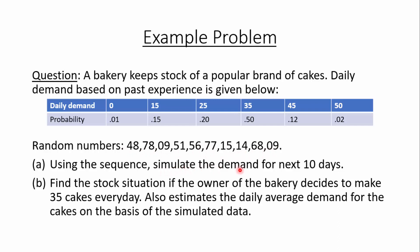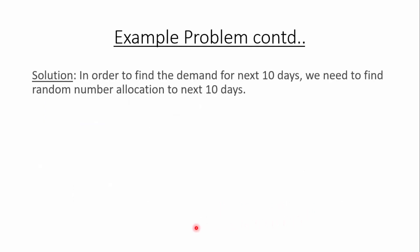The second part asks us to find the stock situation if the owner of the bakery decides to make 35 cakes every day, and also to estimate the daily average demand. So we need to find the stock after 10 days when the bakery makes 35 cakes every day, and we need to estimate the daily average demand.